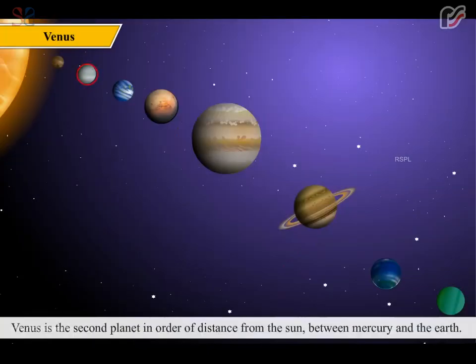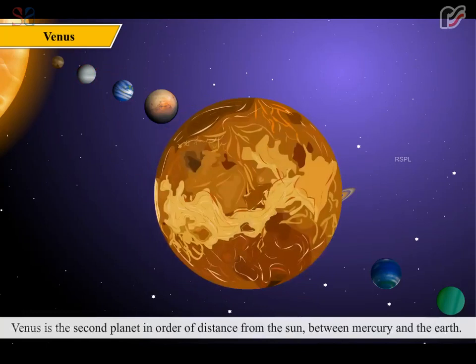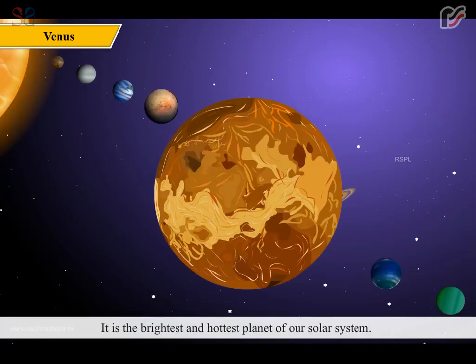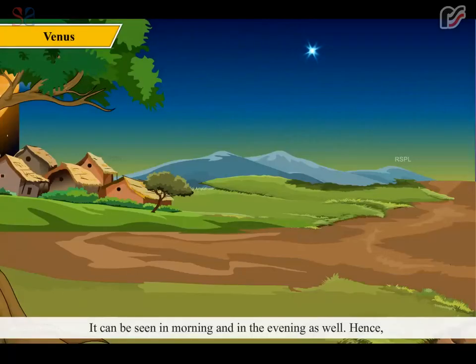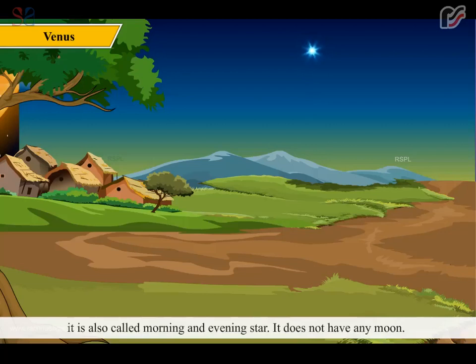Venus is the second planet in order of distance from the Sun, between Mercury and the Earth. It is the brightest and hottest planet of our solar system. It can be seen in morning and in the evening as well. Hence, it is also called morning and evening star. It does not have any moon.